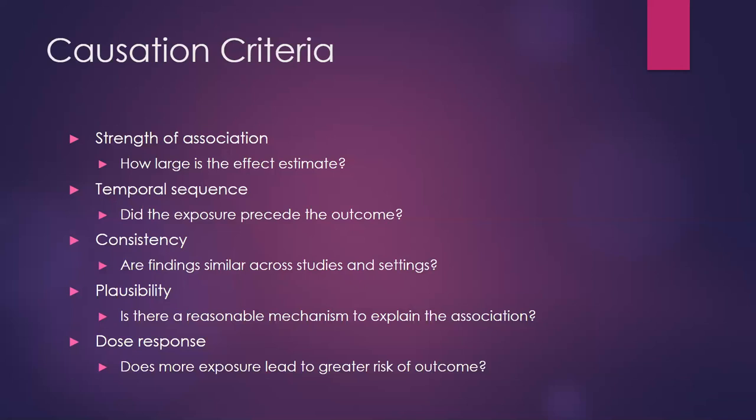If results can't be replicated from a promising early study, that gives pause about whether the exposure truly causes the outcome or whether there was some flaw in study design or a unique population. Regarding plausibility: we always want to think about whether there's a reasonable mechanism to explain the association. Is there some reason the exposure could be expected to cause the outcome? Biologic mechanisms are an obvious example — a gene mutation and risk of cancer, for instance — but theoretical models can also support plausible mechanisms for social or behavioral exposures like discrimination or isolation.